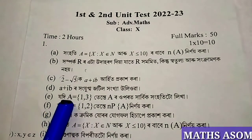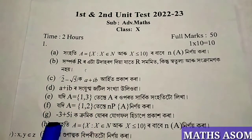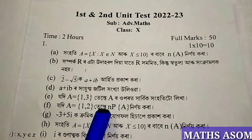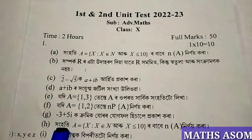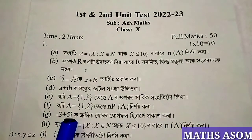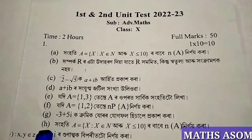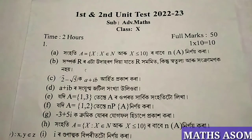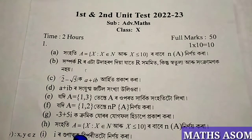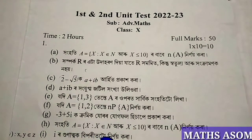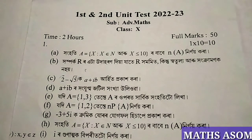A plus i will be a complex number (jotil hongkhya). Part E: If A = {1, 3}, write the power set of A. If A = {1, 2}, write the power set of A. Find n(A). Find the multiplicative inverse of the number.